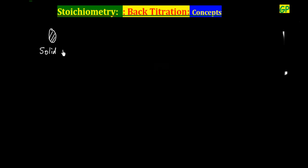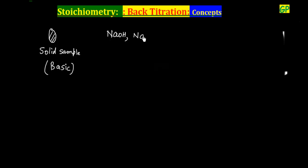Let us say I have a solid sample that is basic in nature. This means it can be NaOH, Na2CO3, NaHCO3, or calcium carbonate CaCO3 — all of these are basic in nature.